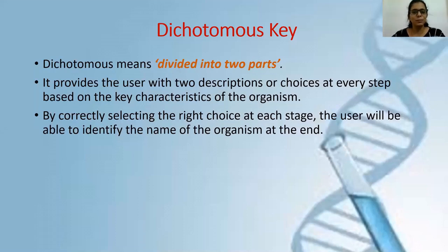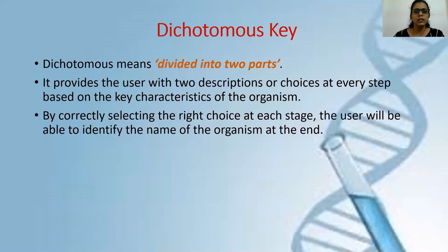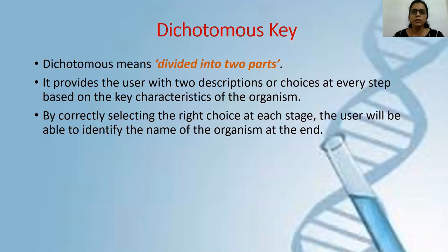Hello everyone. In this video we are going to learn about dichotomous key. In the field of taxonomy, users are always provided with different keys so that they can easily identify the name of an unknown organism. Any unknown or different organism is given to a user, and by using different keys, the user can easily identify the name of that particular organism and also identify which particular group it belongs to. These keys are made on the basis of characteristic features shared by different living organisms, or features unique to a particular group. One example of such a key is the dichotomous key.